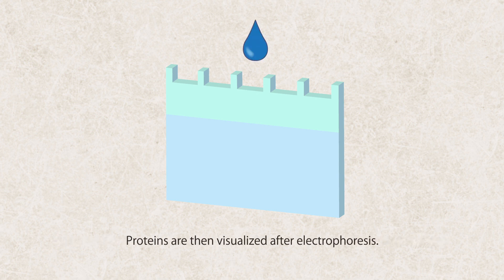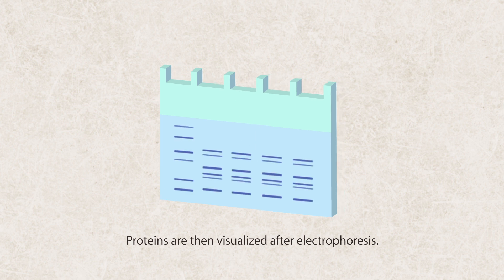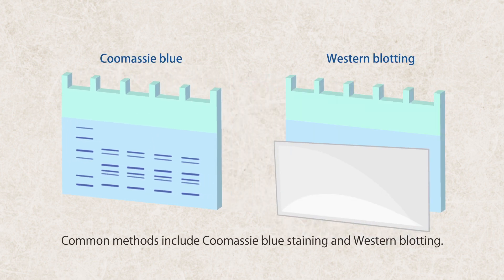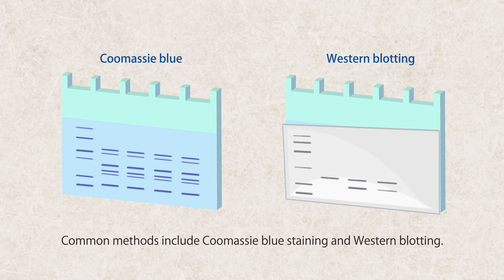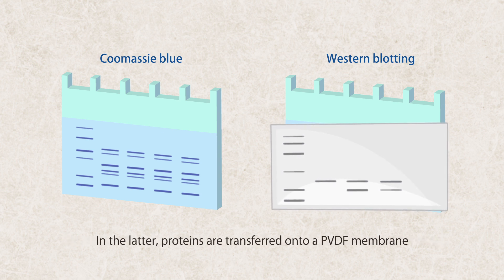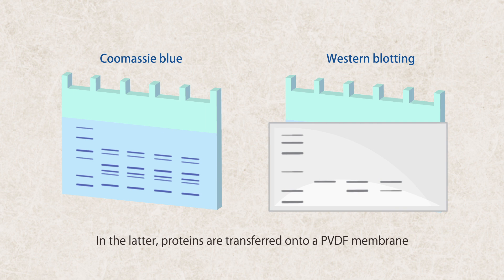Proteins are then visualized after electrophoresis. Common methods include Coomassie blue staining and western blotting. In the latter, proteins are transferred onto a PVDF membrane, and proteins of interest are detected with specific antibodies.